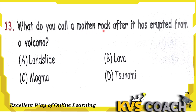Next question: what do you call molten rock after it has erupted from a volcano? Option A, Landslide — downslope movement of soil and rock under gravity. Option B, Lava — yes, lava is the molten rock that has erupted from a volcano. Option C, Magma — very hot liquid rock found below the earth. Option D, Tsunami — a natural disaster caused by sudden disturbance under the sea. So the right answer is option B, Lava.